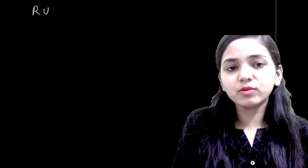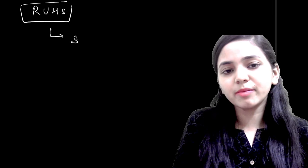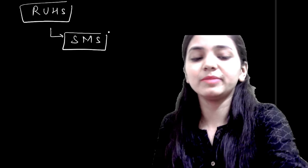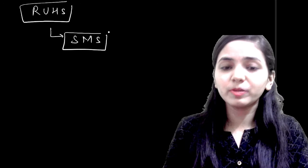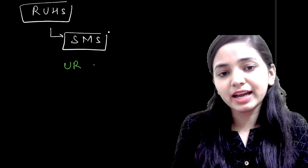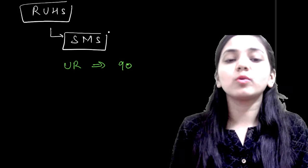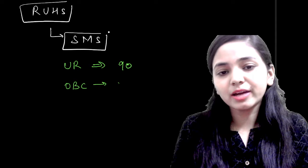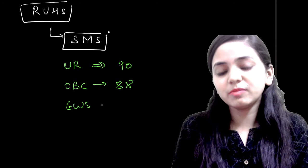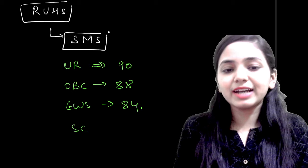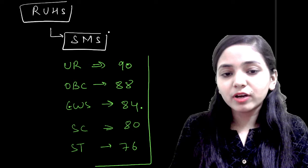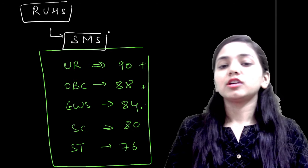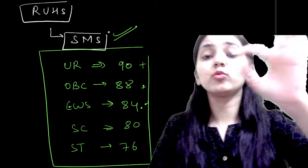First of all, I'm going to talk to you about RUHS. In RUHS entrance exam, the most important college for our children is SMS. If you want to get SMS from the general category, your score is 90. If you belong to the OBC category, your score is 88. If you belong to the EWS category, your score is 84. If you belong to the SC category, your score is 80. If you belong to the ST category, your score is 76 or above. Then I'll say that you will get SMS with full chance.